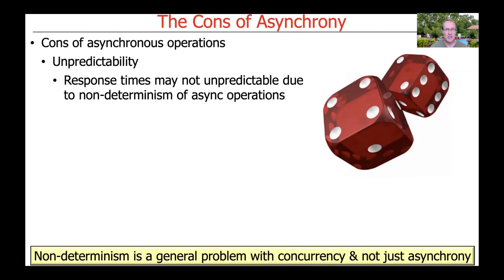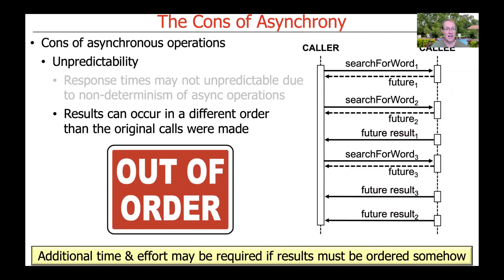Note that this non-determinism is a general problem with concurrency, not just asynchrony. The minute you start doing things concurrently, it's kind of all bets are off as to how long things take, because it's up to the underlying operating system, virtual machine, and hardware to figure out when things get scheduled and executed. Additionally, results can come back in a different order than the original calls were made — you can get out-of-order results.